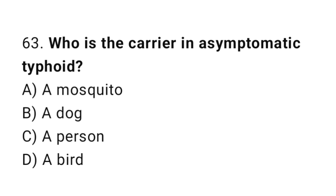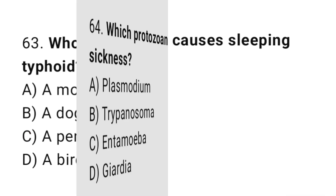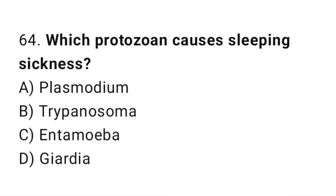Question number sixty-three: who is the carrier in asymptomatic typhoid? The correct answer is C, a person. Question number sixty-four: which protozoa causes sleeping sickness? The correct answer is B, Trypanosoma.